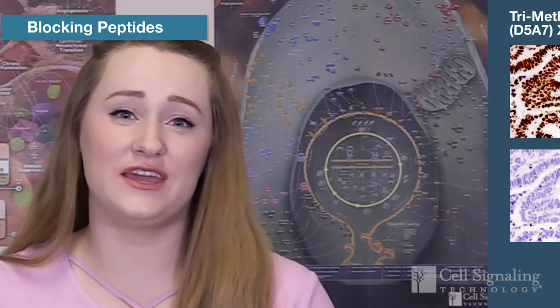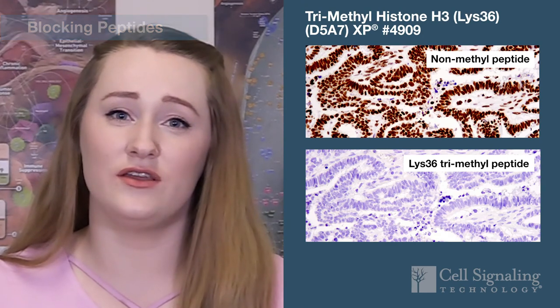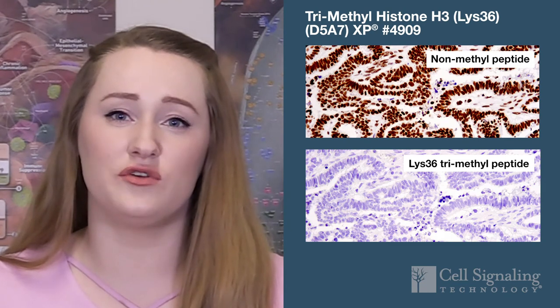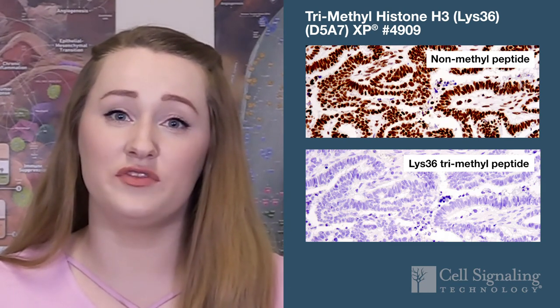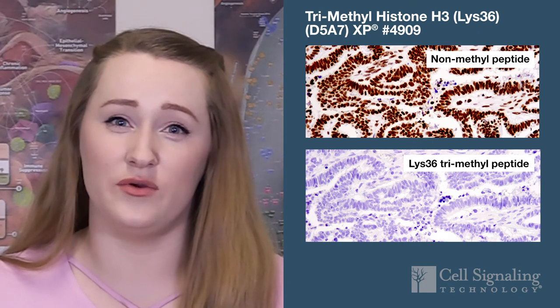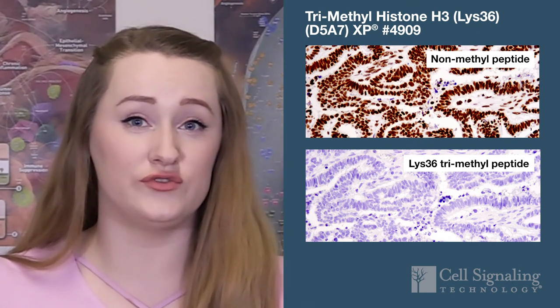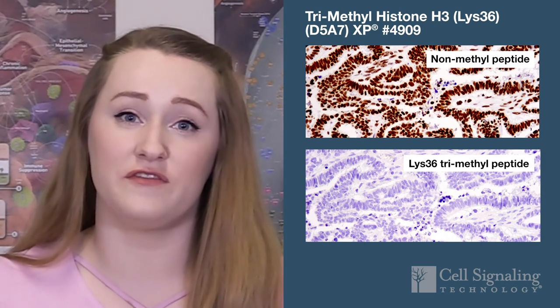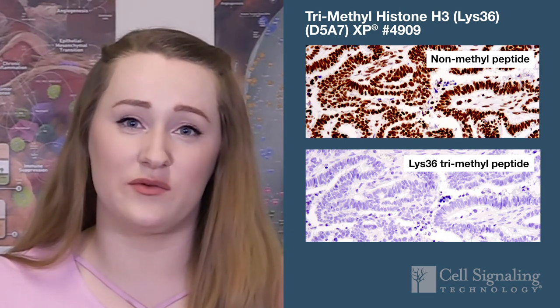To assess modification specificity when using methyl, acetyl, non-phospho, and cleavage-specific antibodies, you can design IHC control experiments using blocking peptides. Note that blocking with a single peptide alone doesn't confirm specificity. For a true test of modification specificity, compare the staining in the presence of the non-modified peptide versus the peptide with the modification. Again, no single assay can confirm specificity, but collecting multiple data points with the right controls can address the specificity and sensitivity of your antibody and can improve confidence that your staining is real.